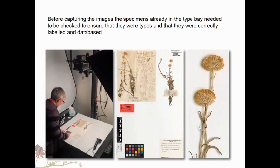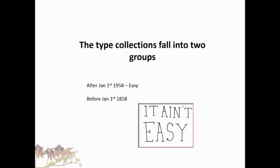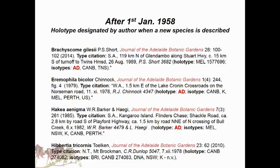Before capturing images of our type specimens here in Adelaide, we needed to check through them to make sure they were actually types and correctly labeled and databased. Our type collection falls into two groups: those describing new species after January the 1st, 1958 are easy, but those before that date are quite difficult.